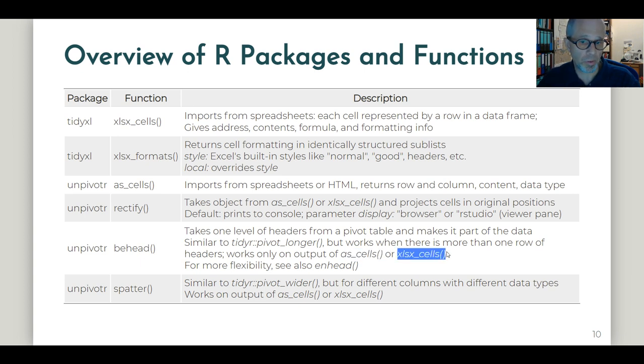But behead needs the output of an as_cells or xlsx_cells function, so it works on the specific type of object. And it can work when there's more than one row of headers.